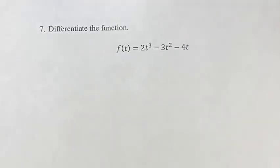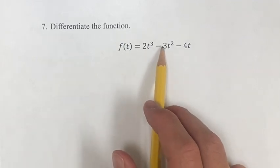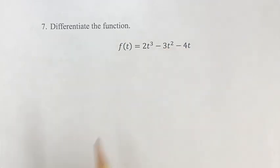Hello, and welcome back to another video. This problem, we're asked to differentiate the function f of t equals 2t cubed minus 3t squared minus 4t. How do we go about doing that?